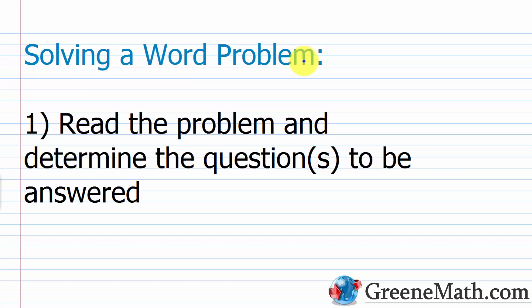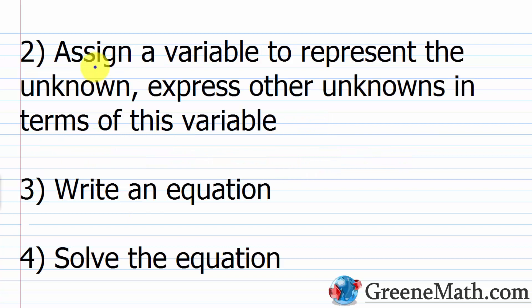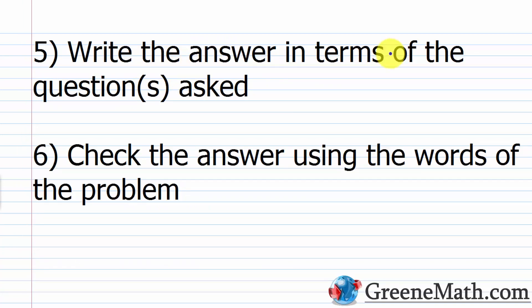For solving a word problem: first, read the problem and determine the question or questions to be answered. Assign a variable to represent the unknown, then express other unknowns in terms of this variable. Then write an equation, solve the equation, write the answer in terms of the question asked, and check the answer using the words of the problem.